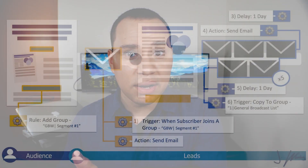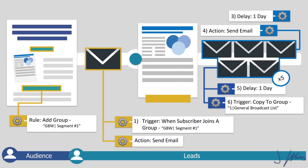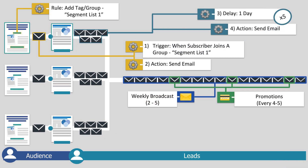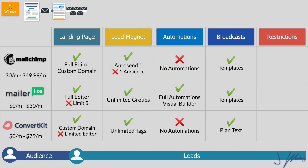Moving on to broadcasts — this is a little different. Whereas automations send emails automatically, with a broadcast you manually go into the software and specify which email you want to send to which people at what specific time. All three of them allow you to do that. The only special note here is that ConvertKit does not have email templates — you can only send plain text emails. If having fancy design templates with pictures is important to you, you may want to go with MailerLite or MailChimp.